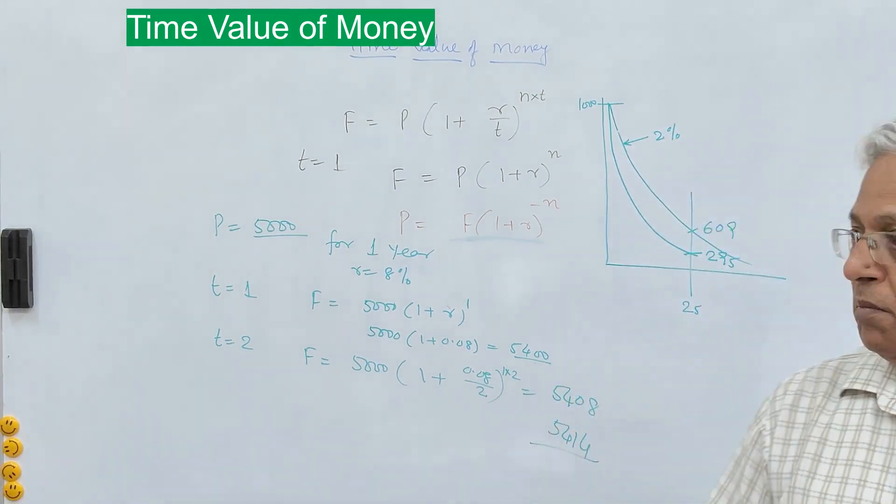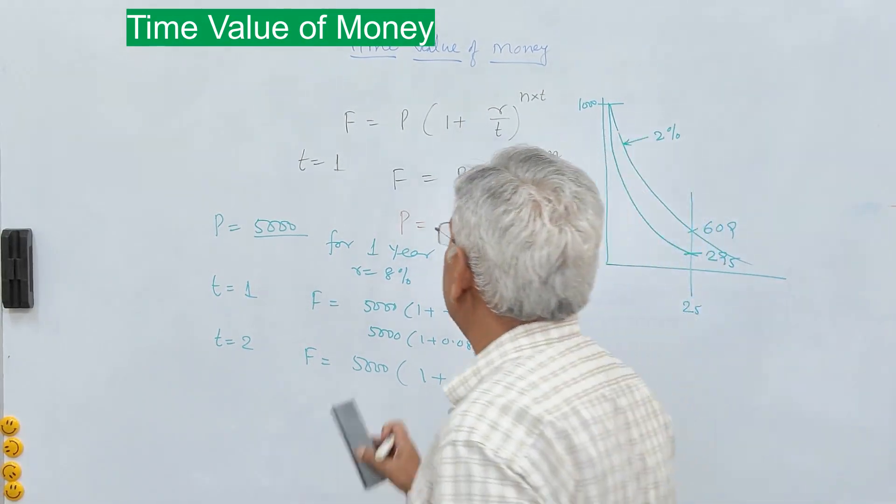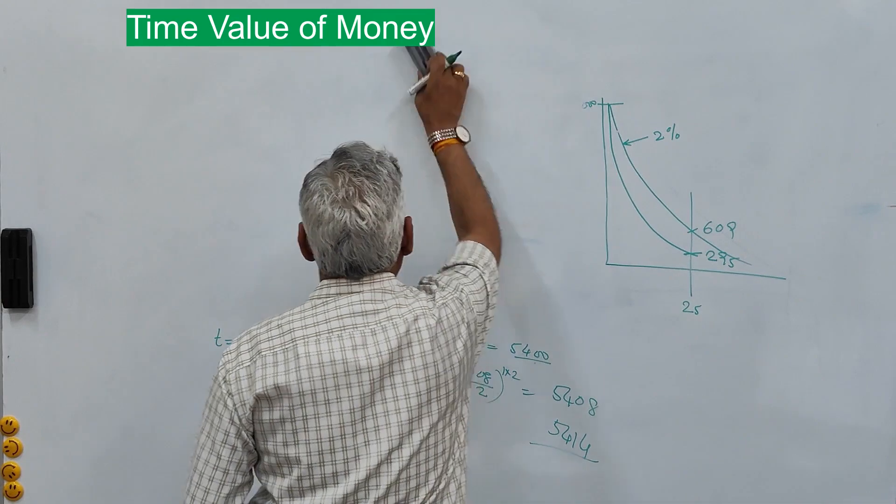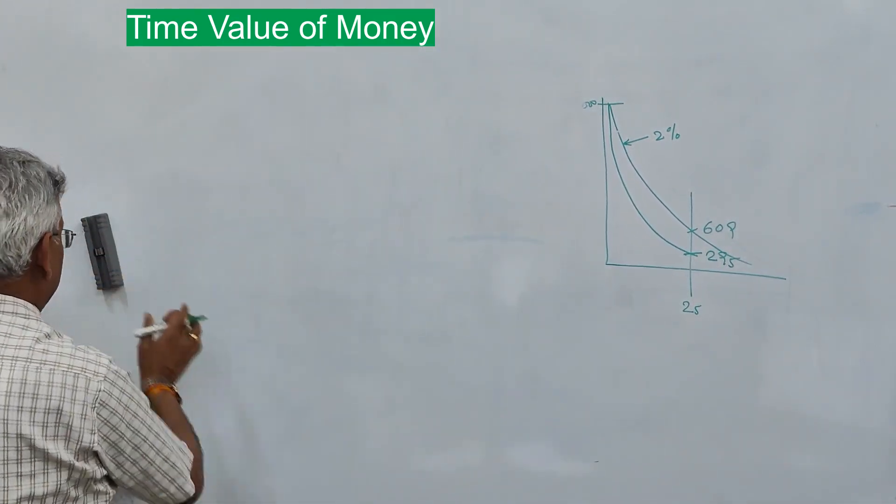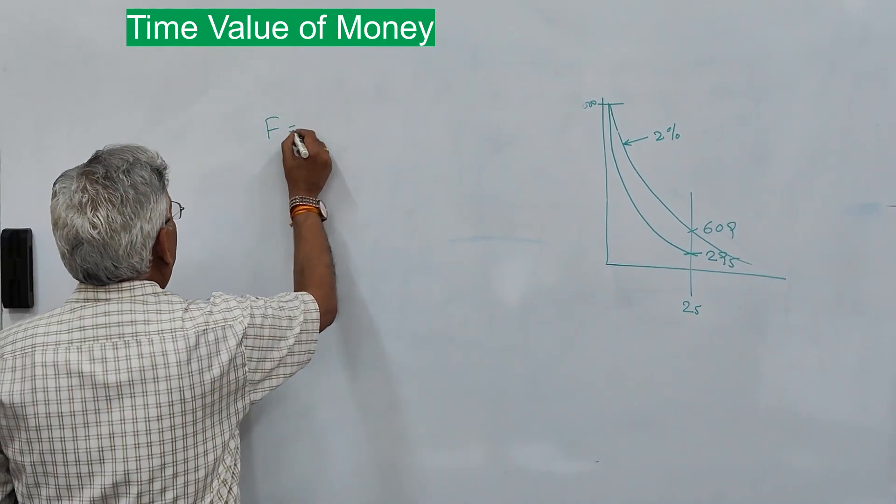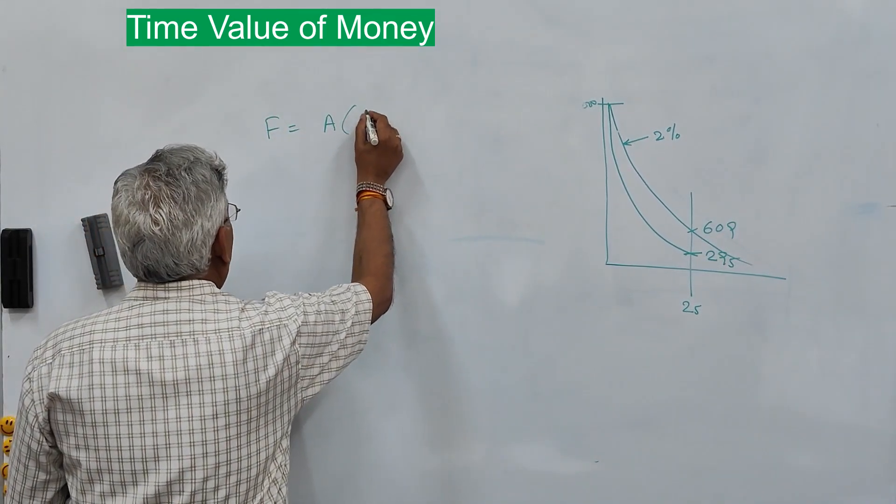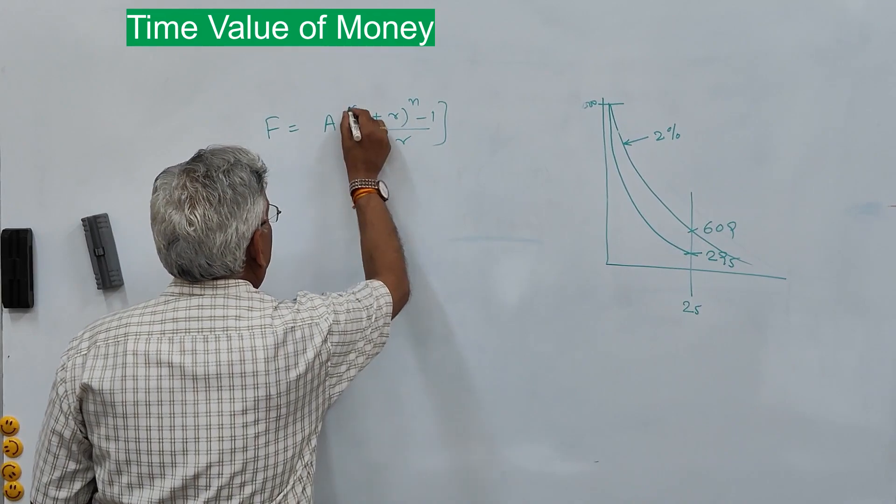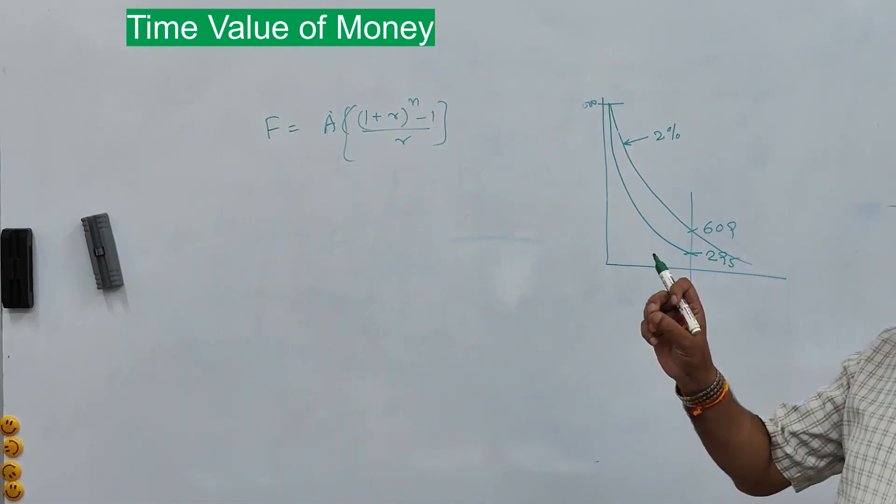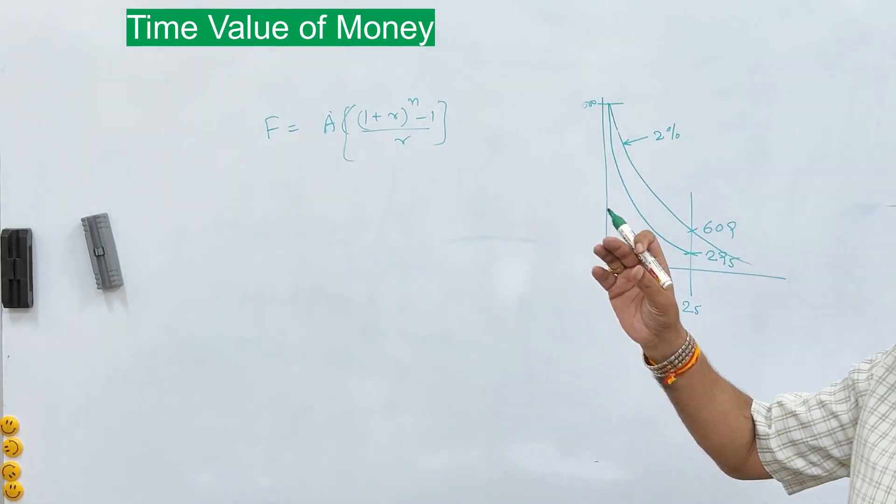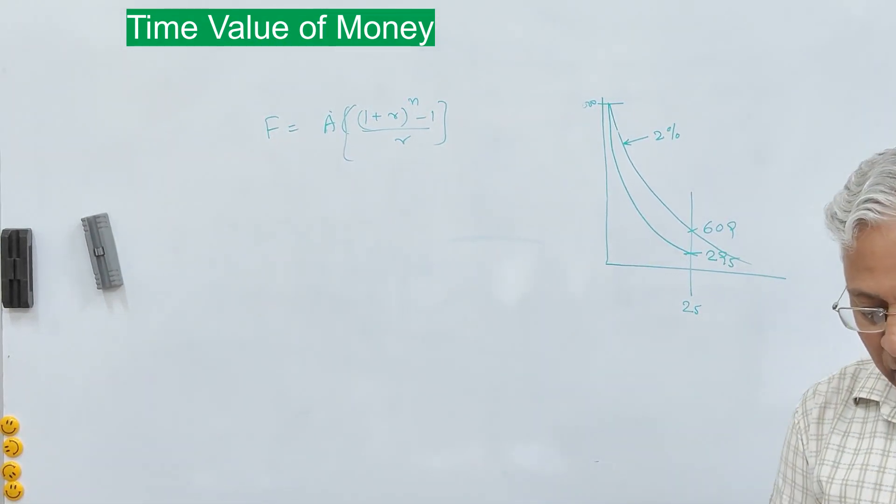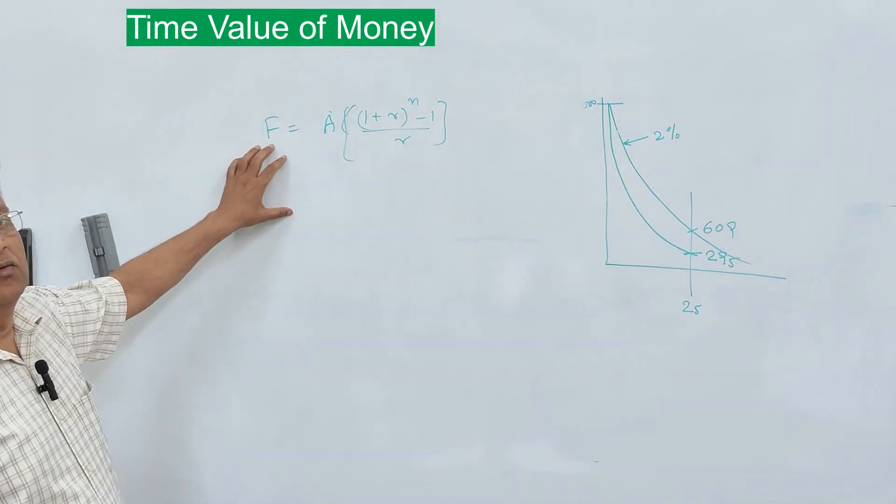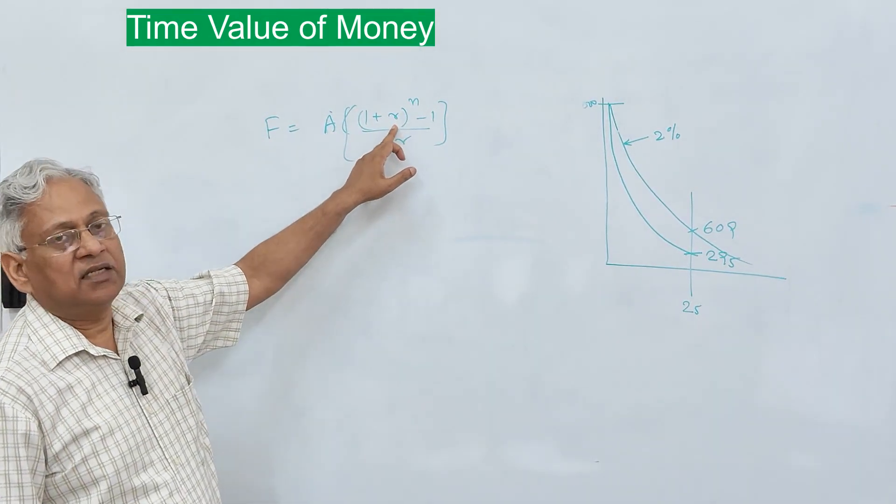Future value of annuity: when you pay the amount regularly at a fixed interval, that's called annuity. In that case, the future amount will be A[(1 + R)^N - 1]/R. That is the equation. A here is annuity to be paid yearly. Cash flow remains same, that is A. What is the future value of this after N number of years at interest rate of R?